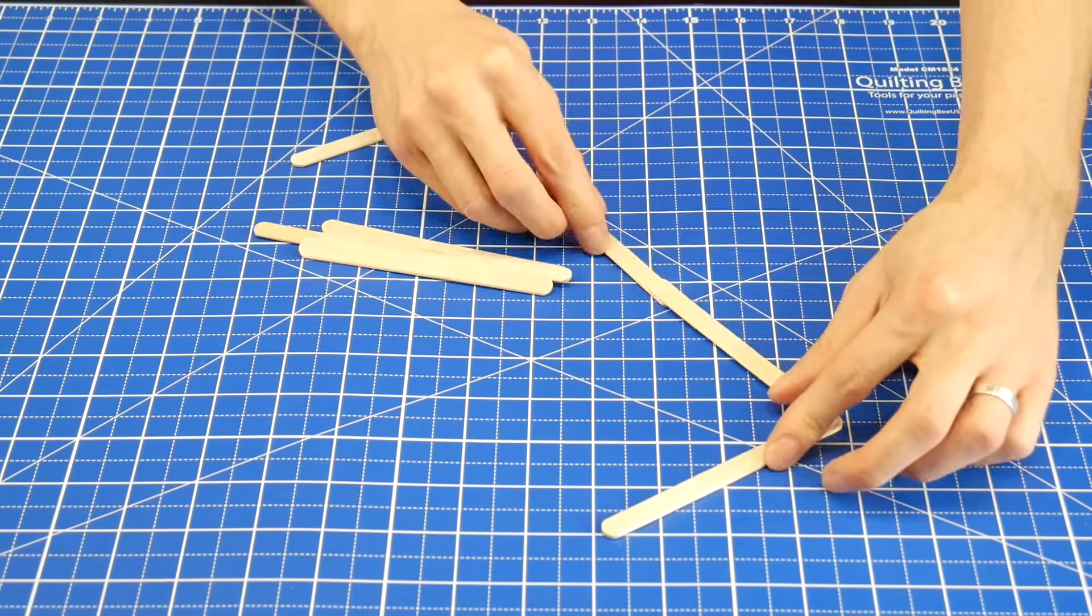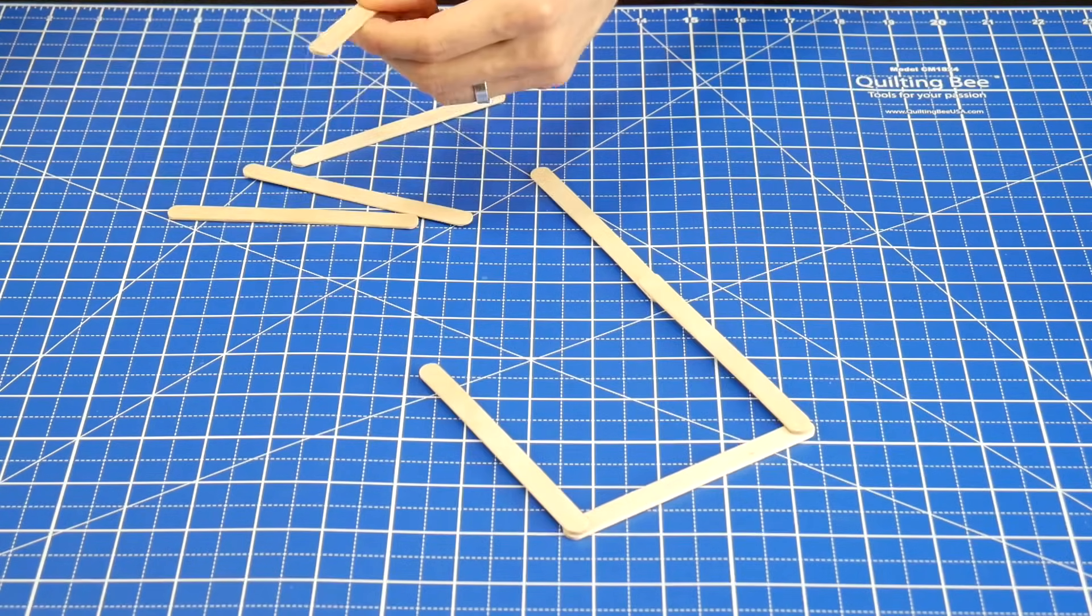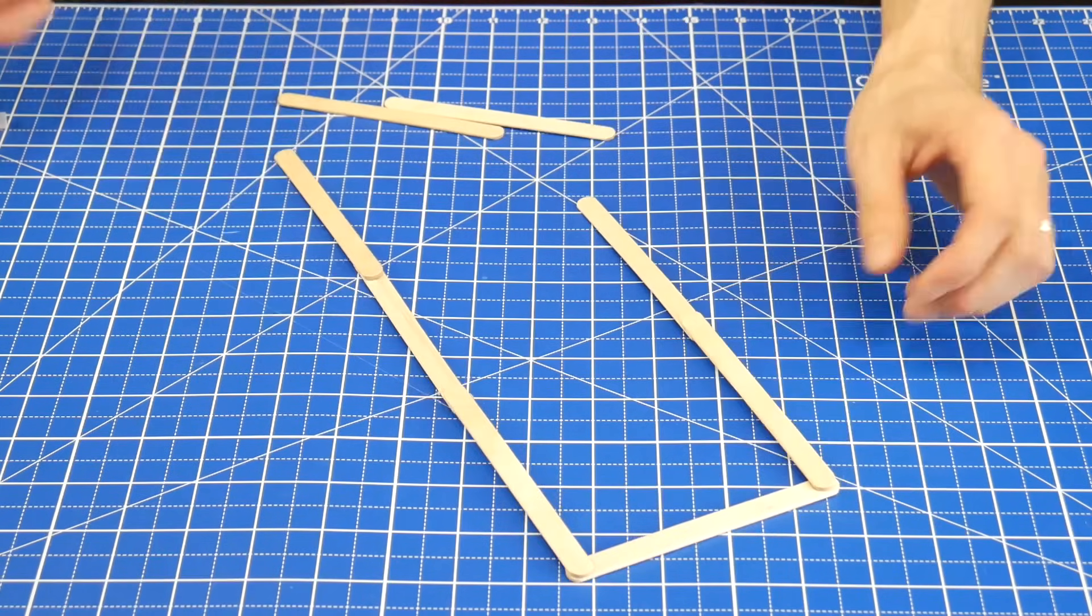First build a rectangle that's about three craft sticks long. It can be longer if you want, but this is a good place to start.